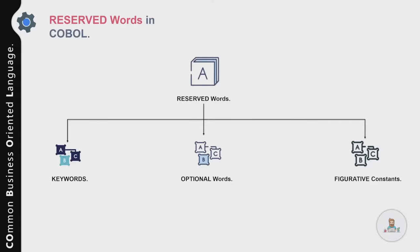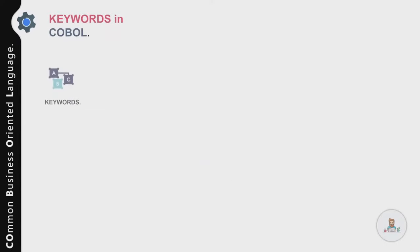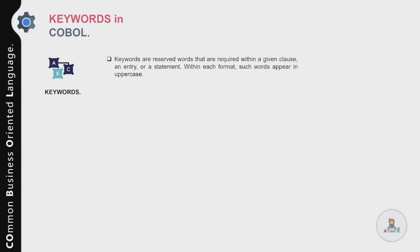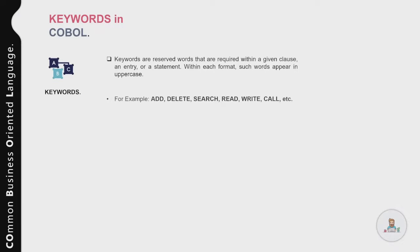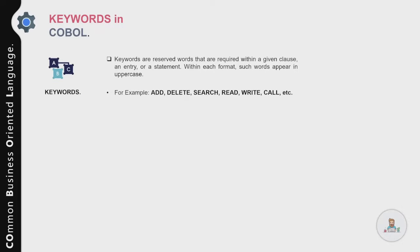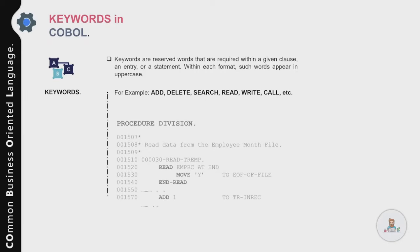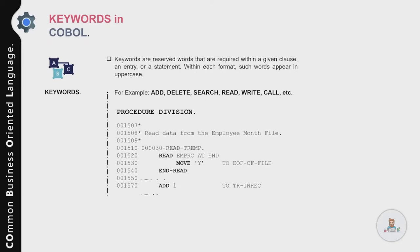Keywords are reserved words that are required within a given clause, entry, or statement, and they appear in uppercase on the main path. Here are some examples of keywords — the list is quite lengthy. ADD is used to add two or more variables. DELETE is used to delete a record from a file. SEARCH is used to search for a specific value in an array or table.